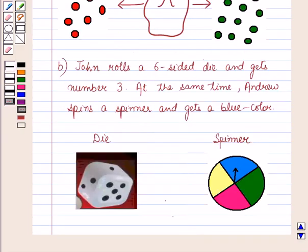And the second statement is John rolls a six-sided die and gets number three. At the same time Andrew spins a spinner and gets a blue color.